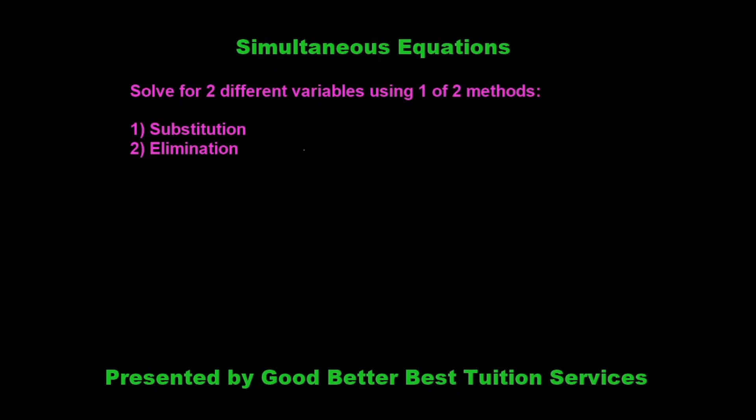So when we do simultaneous equations, we solve for them using one of two methods. We either use substitution or we use elimination.